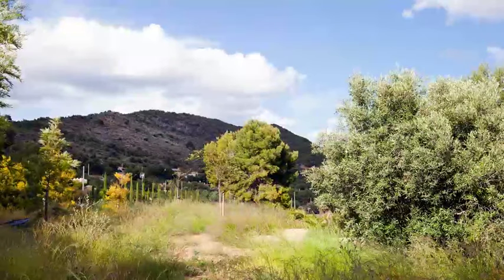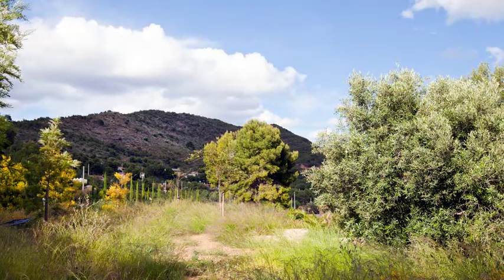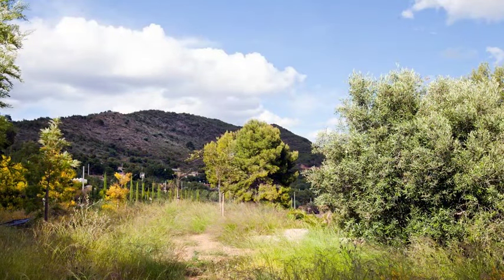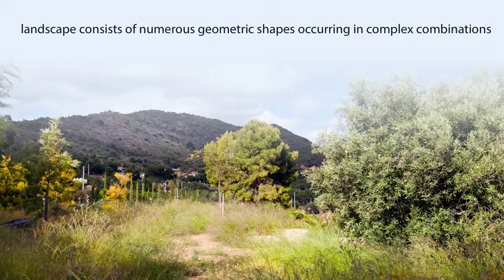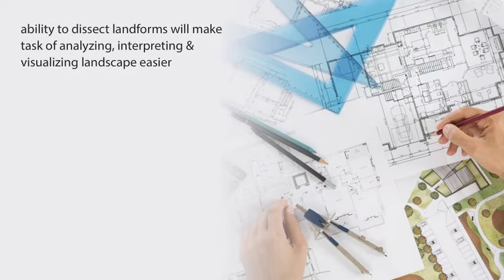These examples are oversimplified in their approach, since they deal with basic geometric forms and straightforward alterations. However, the landscape consists of numerous geometric shapes occurring in complex combinations. The ability to dissect landforms into their various component shapes and to understand the relationship of the shapes to each other will make the task of analyzing, interpreting, and visualizing the landscape easier.